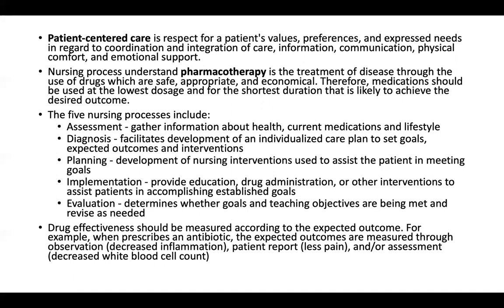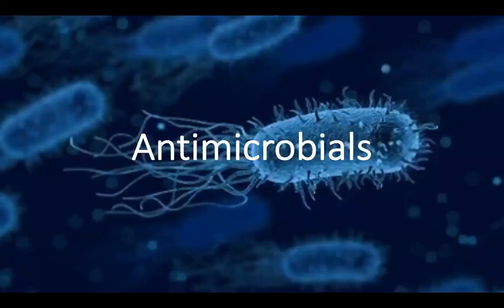Drug effectiveness should be measured according to the expected outcome. For example, if we are giving an antibiotic, the expected outcomes should include: observing a reduction of inflammation, the patient reporting less pain, and assessing whether white blood cell count has decreased. When there is an infection, white blood cells are increased; once the infection comes down after giving antibiotics, the white blood cell count also comes down.